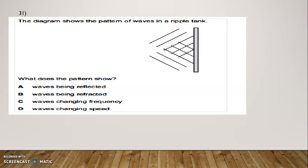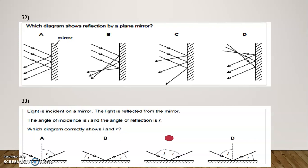Question Number 31: The diagram shows the pattern of a wave in a ripple tank. What does the pattern show? Options: A — wave being reflected; B — wave being reflected; C — wave changing frequency; D — wave changing speed. The correct option is A — wave being reflected. Question Number 32: Which diagram shows reflection by a plane mirror? The correct option is C. Question Number 33: Light is incident on a mirror. The angle of incidence is I and the angle of reflection is R. Which diagram correctly shows I and R? The correct option is C.